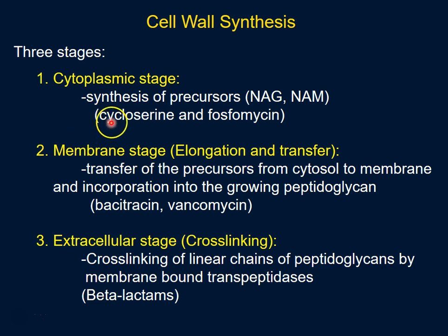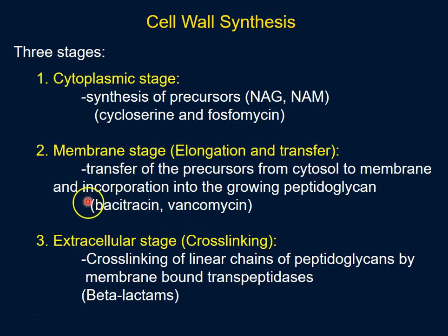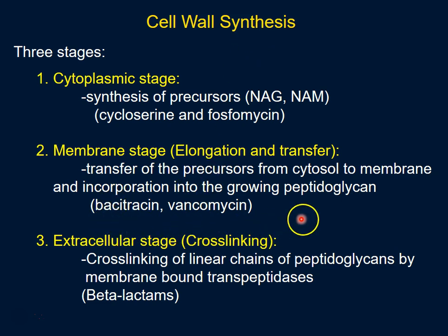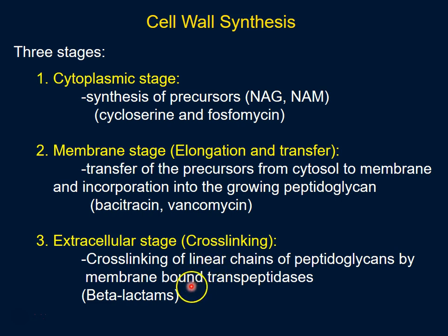The second stage is where these building blocks are transferred outside of the cell membrane and put together to build the glycan layers. There are two inhibitors that inhibit this stage: bacitracin and vancomycin.